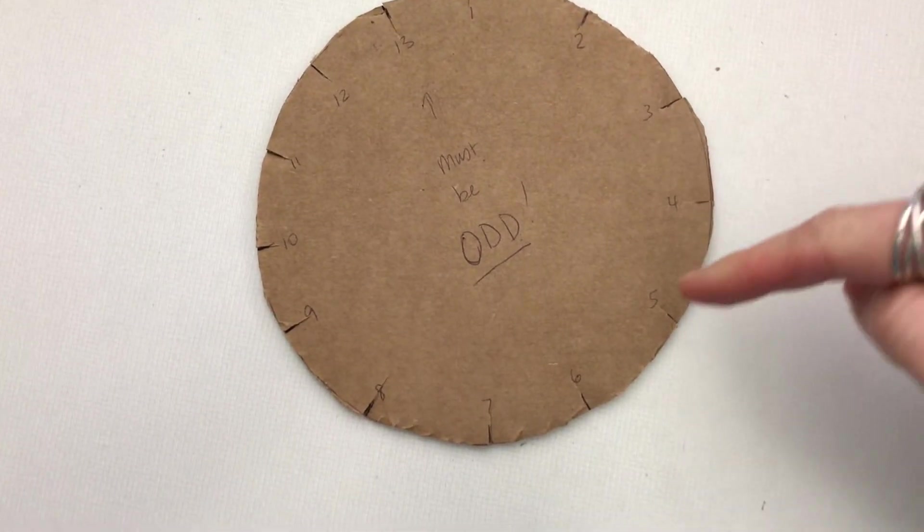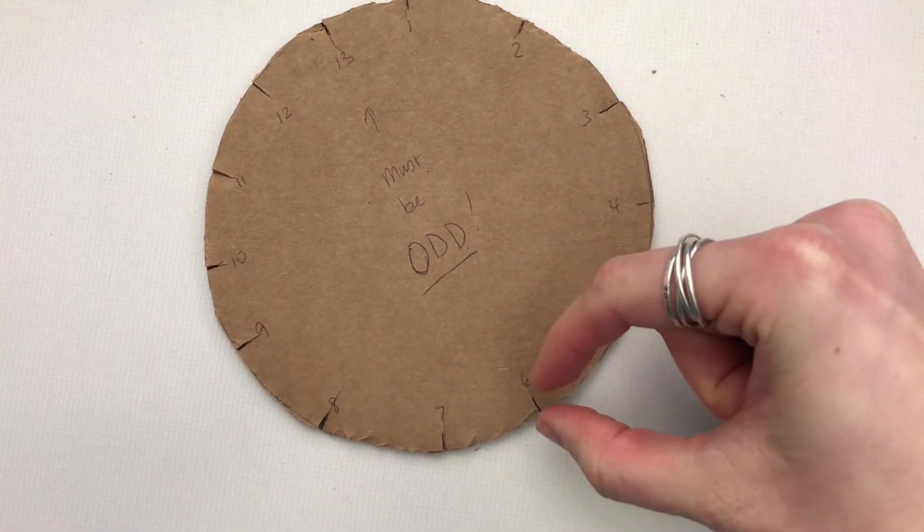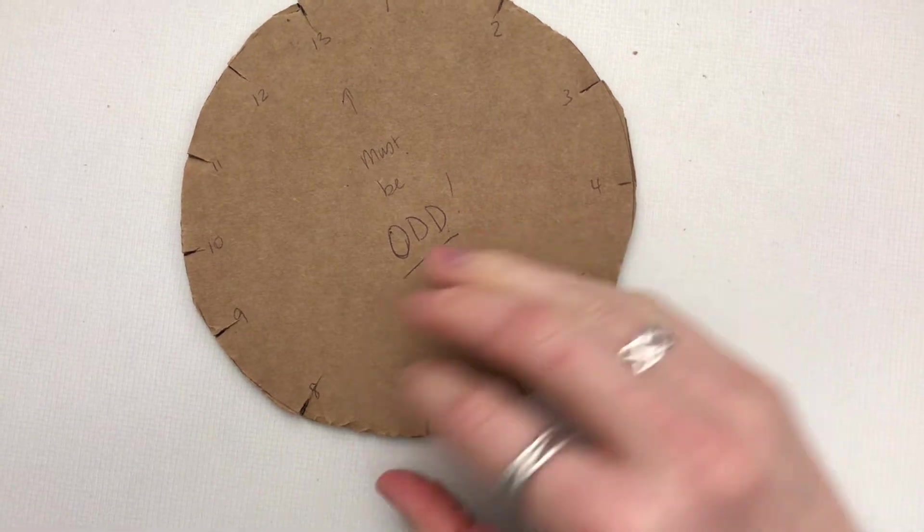Make sure you put a notch in all of your numbers but keep it small. Remember you can always make it larger later, but start small so that it's not too much.